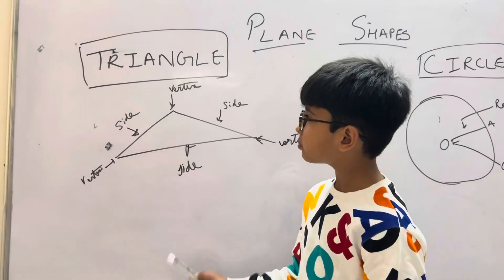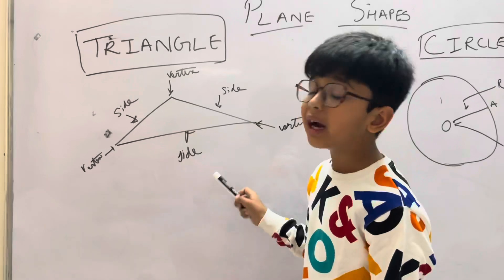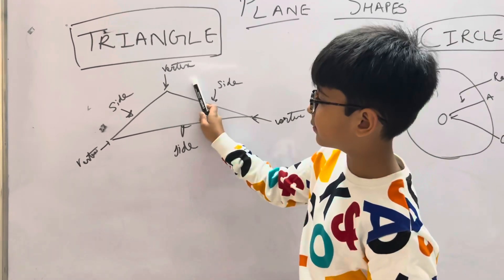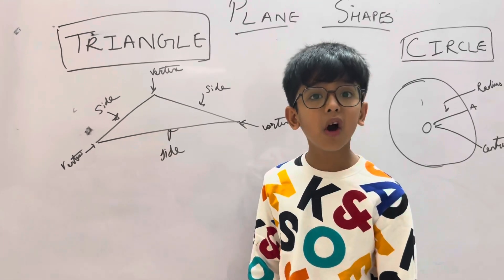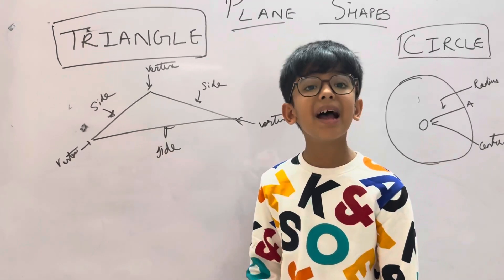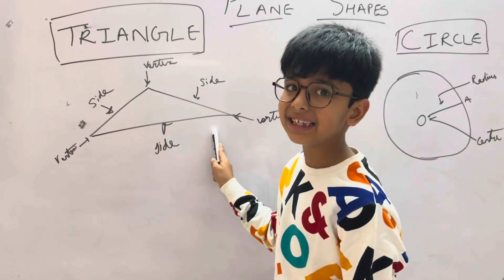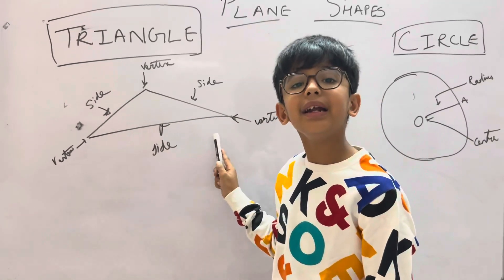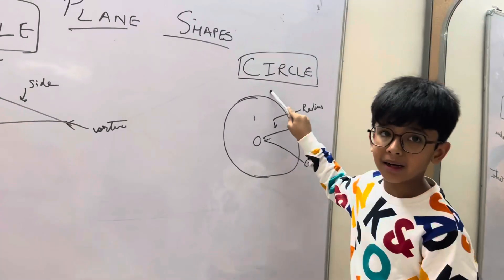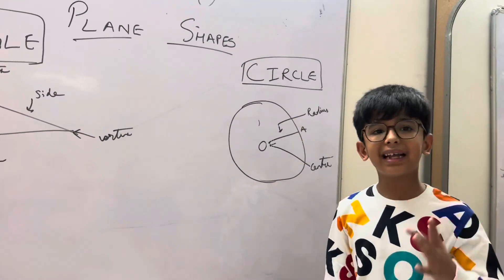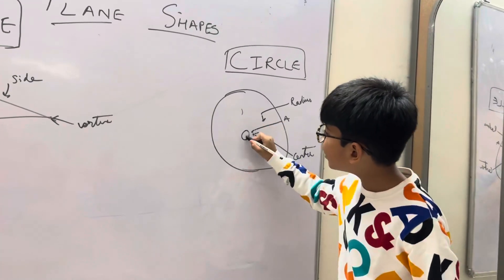A triangle has three sides and three vertices. The sides may or may not be equal. Some examples of triangles are sandwich, pizza slice, and traffic sign.